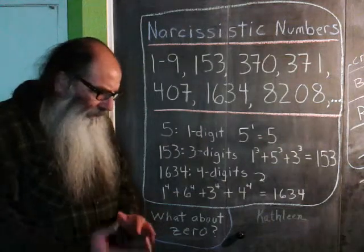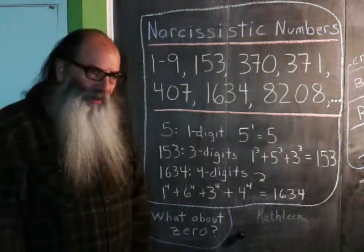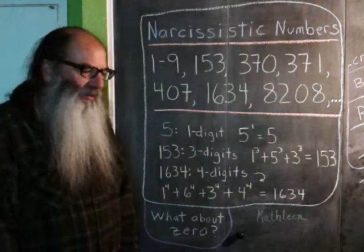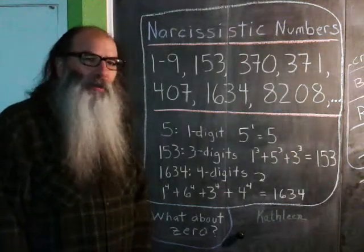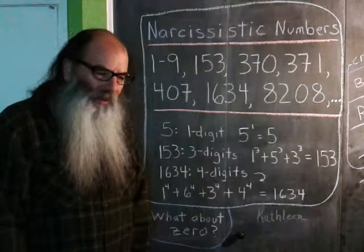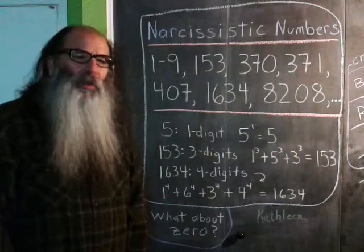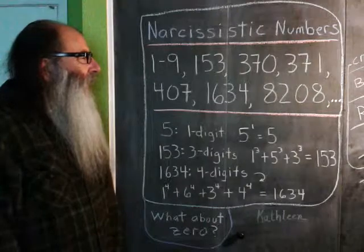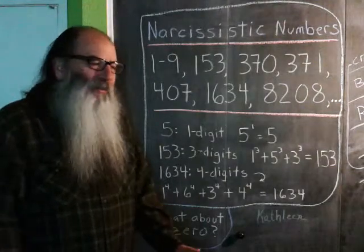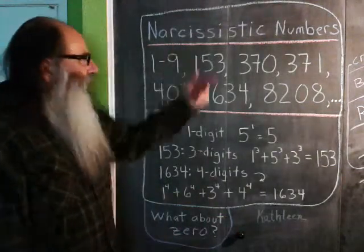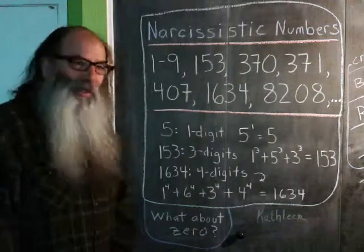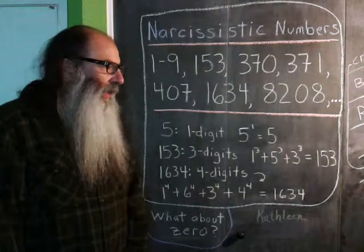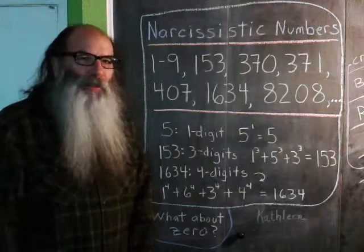And then a little bit of an aside: the Oxford Dictionary has selected its 2013 word of the year and that word is "selfie." Narcissistic numbers — I think that's all I have to say about that. I guess this math babbler bit's over.